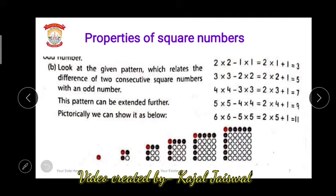The next property looks at the pattern which relates the difference of two consecutive square numbers with an odd number. Consecutive numbers means the numbers that come just after a number — after 4 comes 5, so 5 is the consecutive number of 4; after 5 comes 6, so 6 is the consecutive number of 5. The pattern shows that the difference of consecutive square numbers gives an odd number.